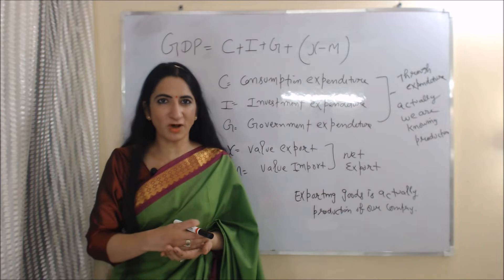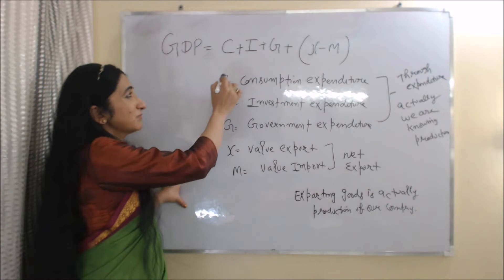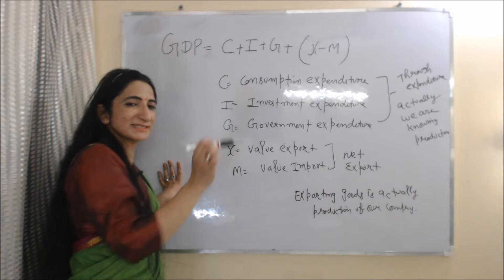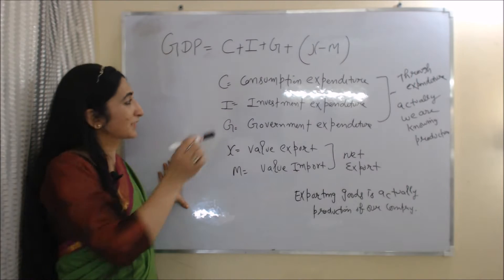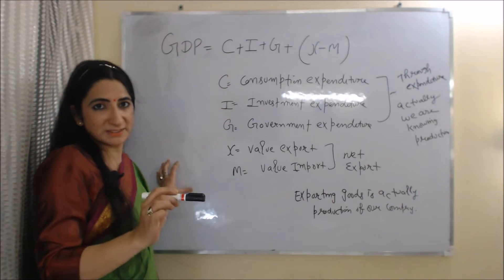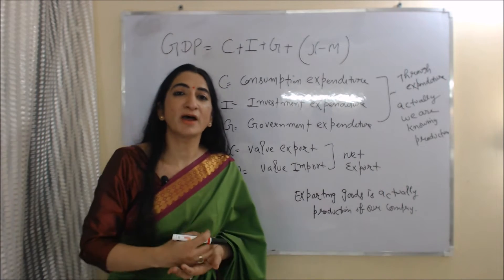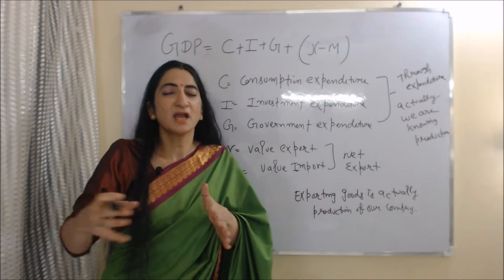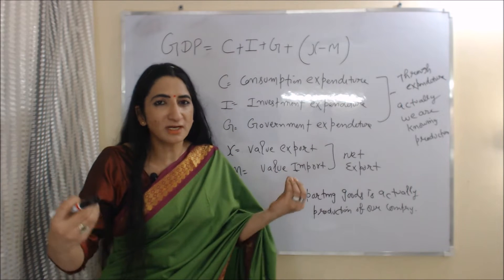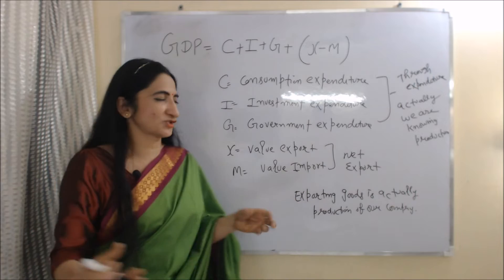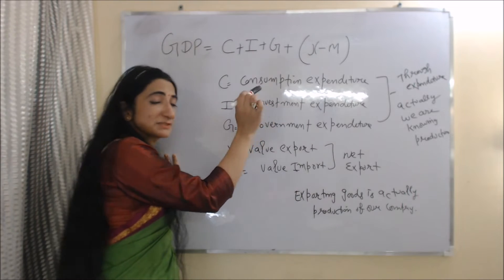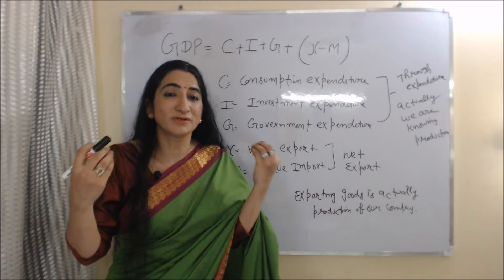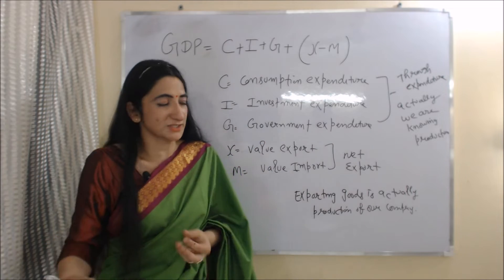Now we will see the formula of GDP: GDP = C + I + G + X − M. C is consumption expenditure — expenditure on final goods and services produced within our country, for example AC, cooler, mobile, etc. I is investment expenditure, meaning expenditure on tools, equipment and machines.